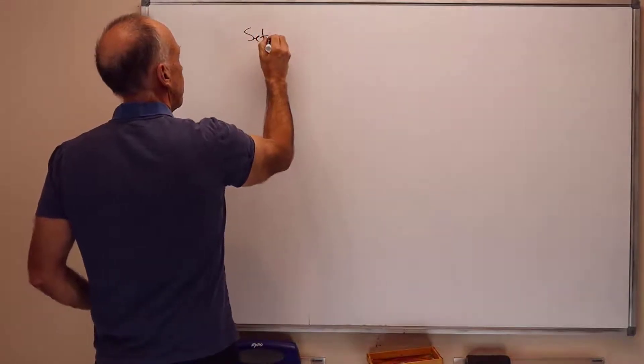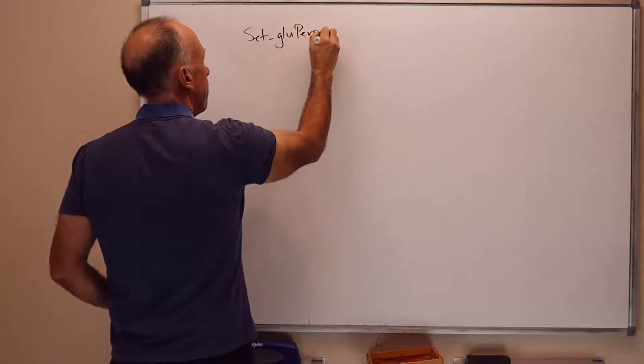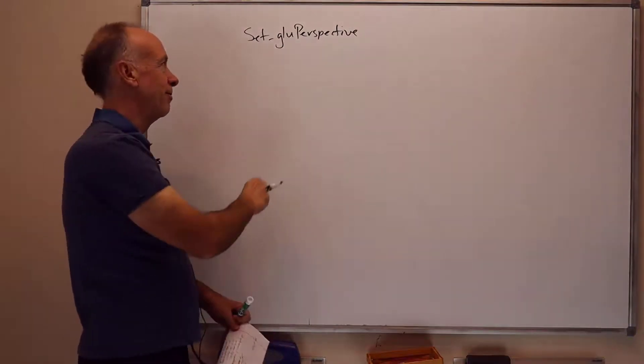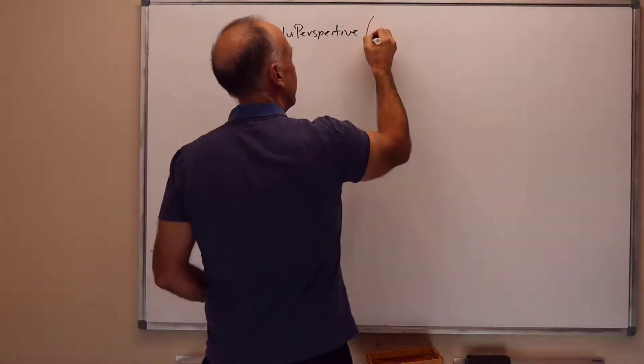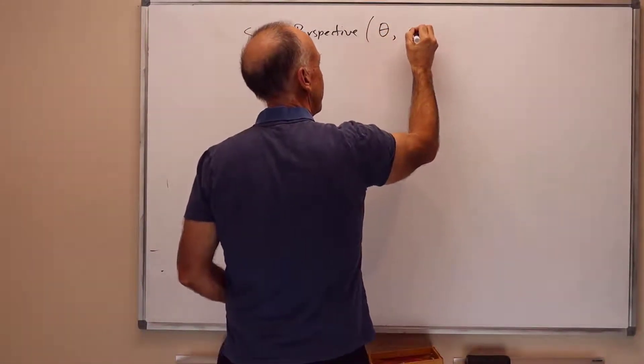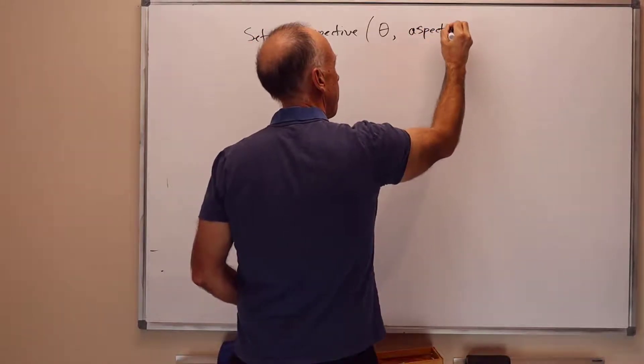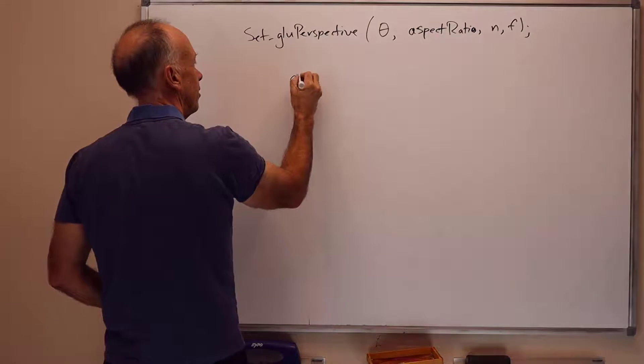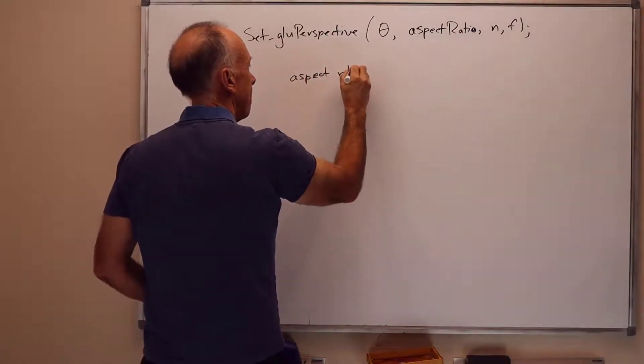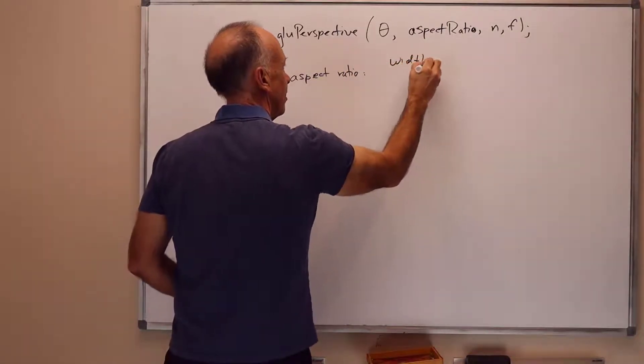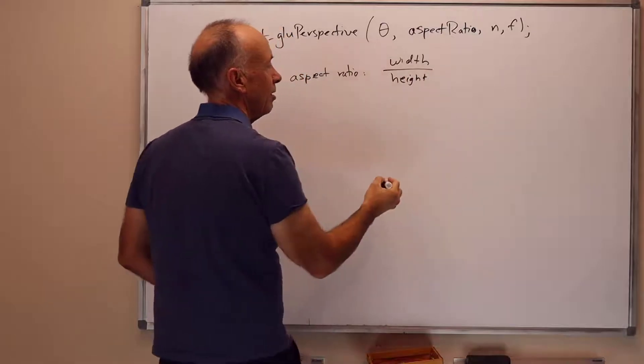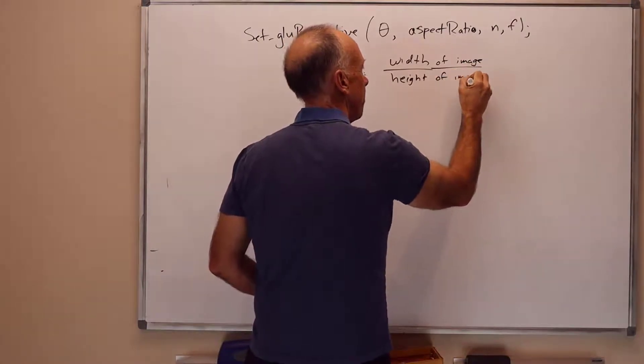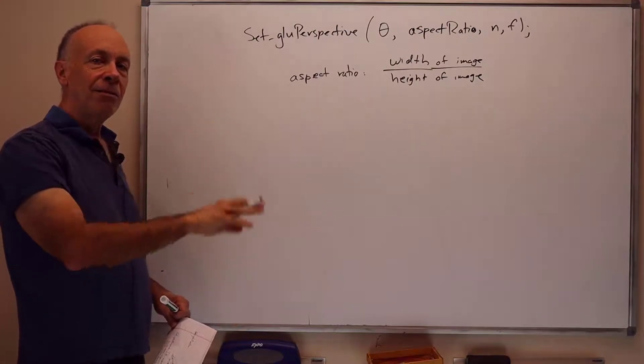The set glu-perspective command. There's a u here, stands for utility. This reflects the fact that in the old OpenGL stuff, this was not a core command. It was defined in terms of other commands. It takes as parameters an angle, theta, a value which I'll call aspect ratio, and the near and the far values, n and f. The aspect ratio means the ratio of width to height. That's the width divided by the height of the image, width of the image of the screen divided by the height of the image. And the theta is the solid angle up and down for the frustum.